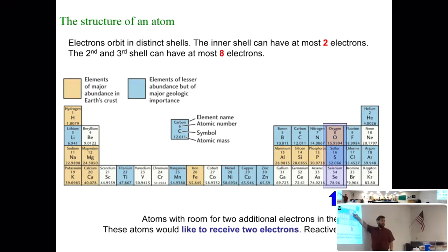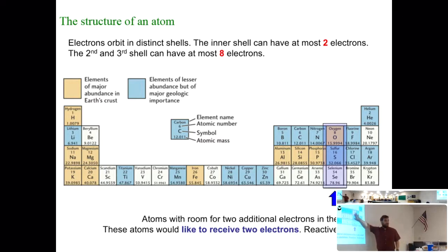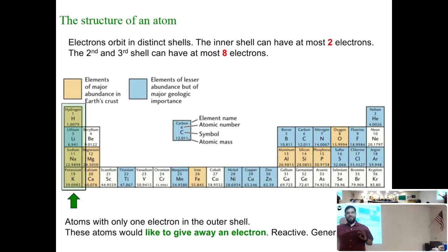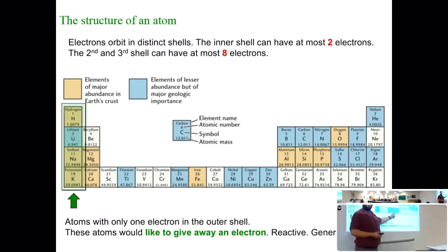The column containing oxygen — those elements all want two electrons. The halogens want one electron. Oxygen is actually a pretty reactive gas — it wants two electrons. That's why things combust. I'm going to skip the transition metals in the middle because there's not much vanadium, chromium, or nickel in the ocean.